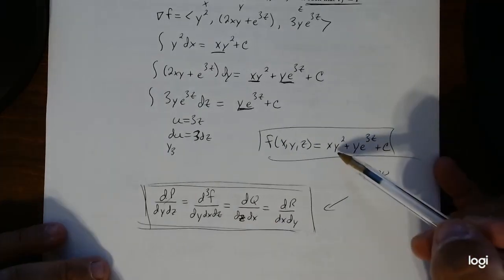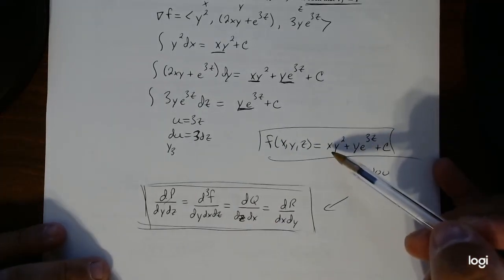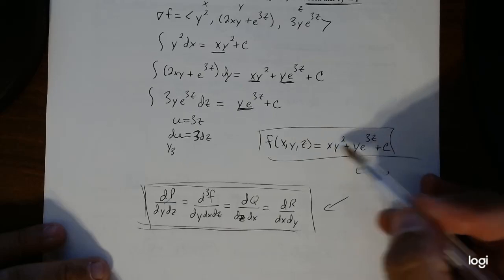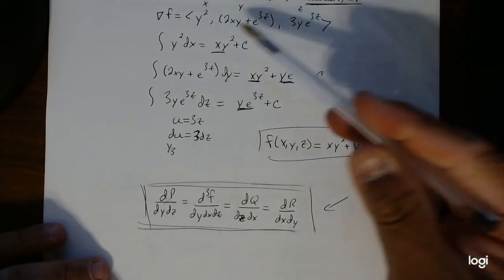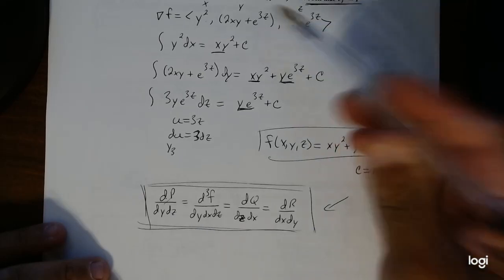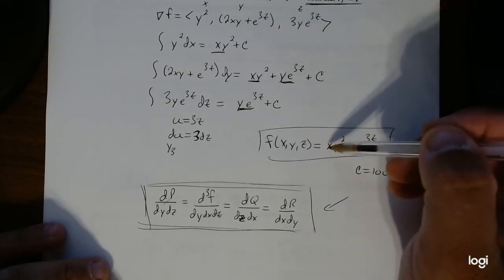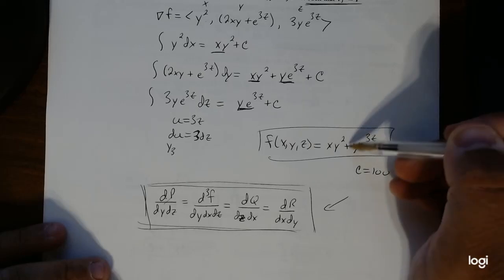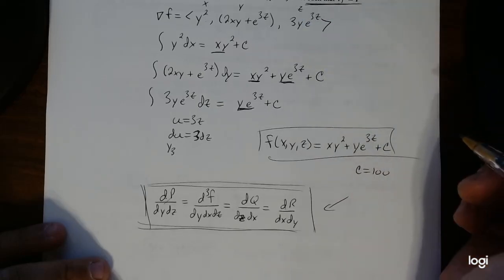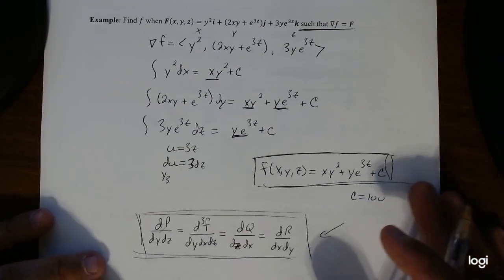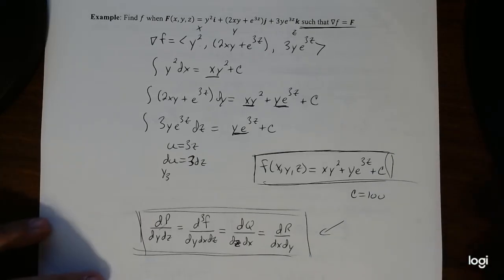You can always check: the derivative with respect to x is y², with respect to y is 2xy plus e^(3z) — using the chain rule — and with respect to z, it's 3ye^(3z). It all works out. That is our function f, and if we really want, we could use this to do the line integral in three dimensions using the same definition from our theorem.